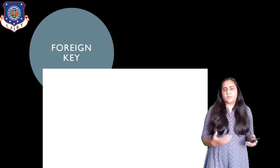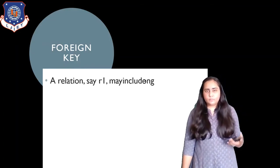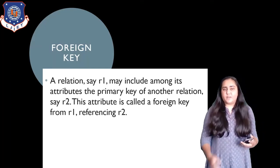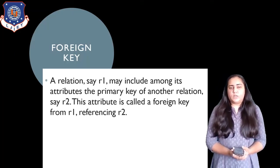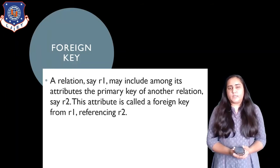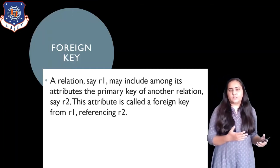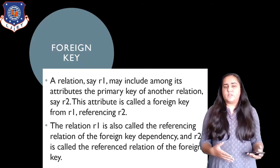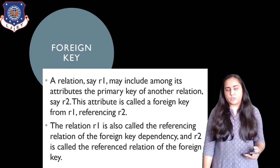There is also a concept in relational databases of foreign keys. A foreign key is where a relation R1 may include among its attributes the primary key of another relation R2 — this attribute is called a foreign key from R1 referencing R2. R1 is known as the referencing relation and R2 is called the referenced relation of the foreign key dependency.